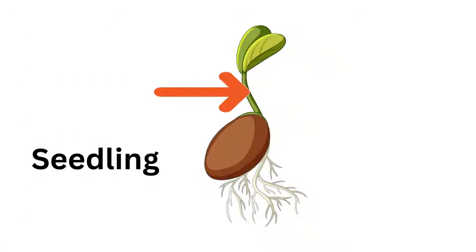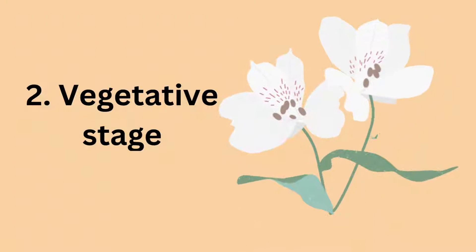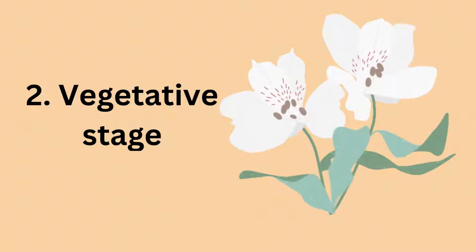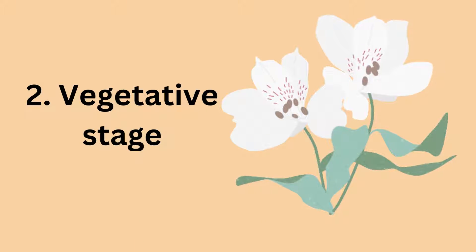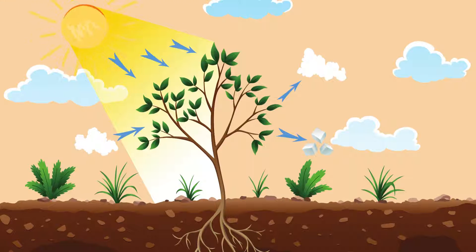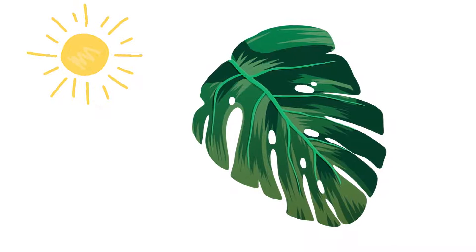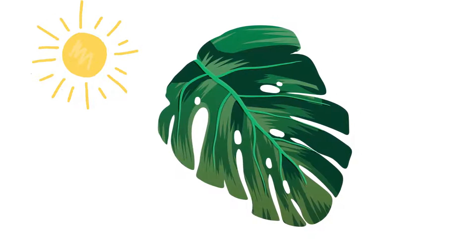The next stage is the vegetative stage, during which the plant will grow leaves, stem, and roots. This stage is critical for the plant to develop the necessary photosynthetic organs, which will allow it to produce its own food through the process of photosynthesis. The leaves absorb sunlight, while the stem and roots transport the produced food to the rest of the plant.